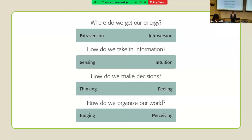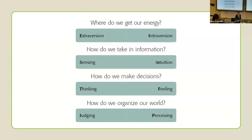Sensing versus intuition is about how you process information, how you perceive the world. Are you paying attention to small details — listing what you see, like the individual things in the picture? Whereas intuitive types are drawn to the big picture — like the 'enchanted forest' answer. If you're an intuitive type, you might be accused of not seeing the individual trees because you're focusing too much on the forest, whereas for sensors it's the opposite — they're focusing on the individual elements.